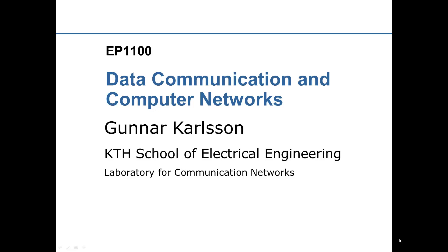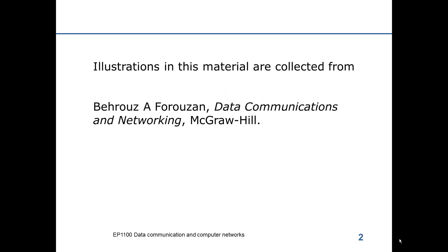EP 1100, Data Communication and Computer Networks. Some illustrations in this material are collected from the book by Foroson, Data Communications and Networking, published by McGraw-Hill. Given a transmission medium, we would like to know what is the ultimate data rate that we can use the medium for. This ultimate rate is often referred to as the transmission capacity of the medium. In order to come to an expression to compute the transmission capacity, we have to first look at what happens to the signal as it propagates through the medium.